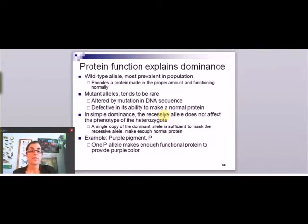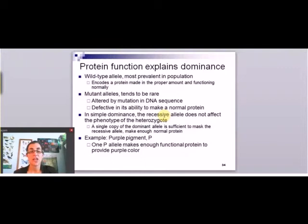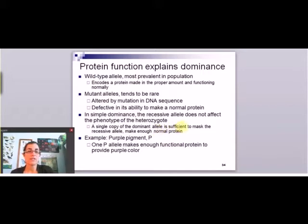Whether an allele is completely dominant or not really has to do with the function of the protein. Usually, dominant and recessive is really about wild type versus mutant. The wild type allele is the allele that's most common in the population, and usually that means it's making the protein in the right amount so that it functions normally. Mutant alleles tend to be rare and have some change in the DNA sequence that usually makes it so that it doesn't make the normal protein anymore, meaning you're making less of the protein.